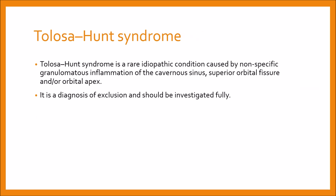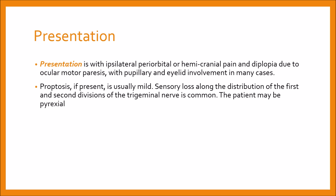Discussing Tolosa-Hunt syndrome: it is a rare idiopathic condition caused by non-specific granulomatous inflammation of the cavernous sinus, superior orbital fissure, or orbital apex. It is a diagnosis of exclusion and should be investigated fully. Presentation is with ipsilateral periorbital or hemicranial pain and diplopia due to ocular motor nerve paresis, with pupillary and eyelid involvement in many cases. Proptosis, if present, is usually mild.